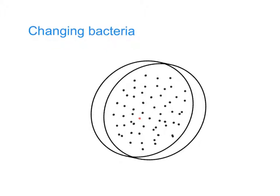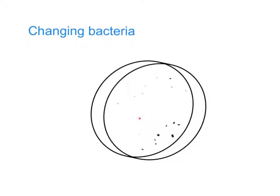Now imagine that we want to get rid of these bacteria. One way of doing it would be to treat the body, or the petri dish, with antibiotics. So we start to treat the body with antibiotics, and you can see the bacteria being killed by the antibiotic. Now it might be that the red one — the mutant bacterium — is also killed. But it might be that the mutation, the change in its DNA, leads to it being resistant to the antibiotic. In other words, the antibiotic won't kill it.